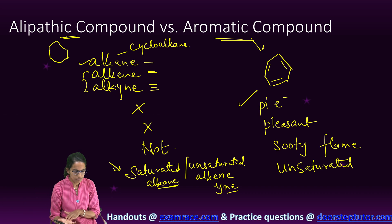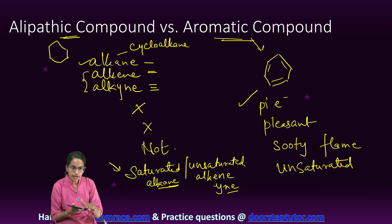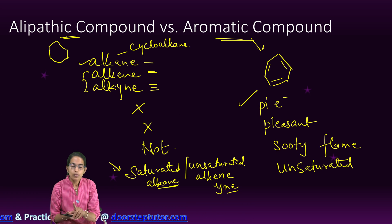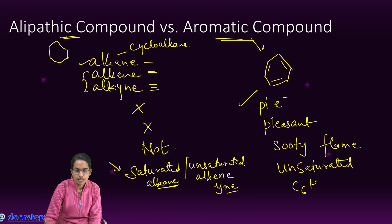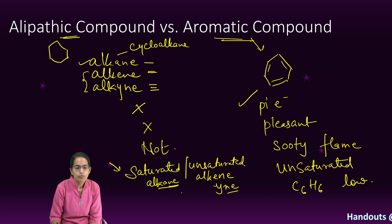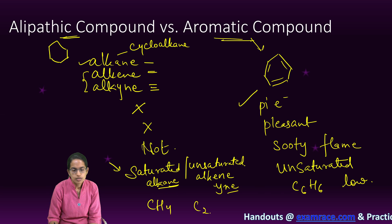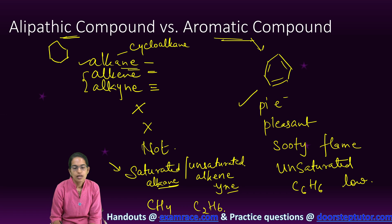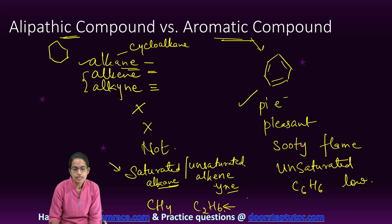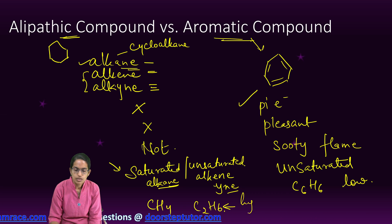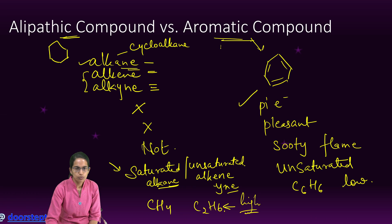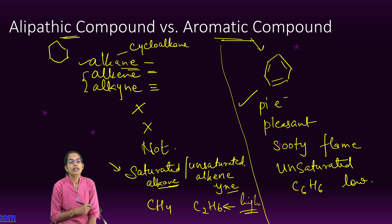The last and most important difference is the carbon-to-hydrogen ratio. In an aromatic compound like benzene (C6H6), the carbon-to-hydrogen ratio is low. However, for aliphatic compounds like CH4 or C2H6 — which are alkanes — the carbon-to-hydrogen ratio is high. That is another major difference between aliphatic and aromatic compounds.